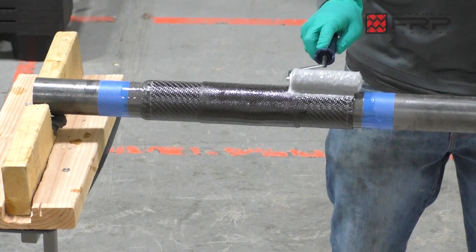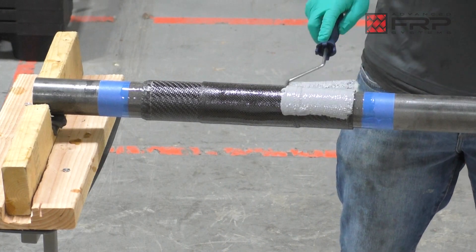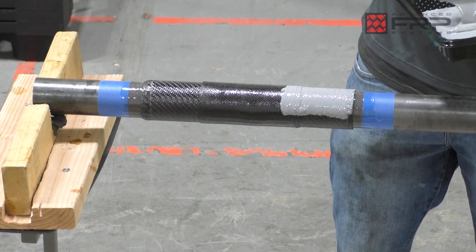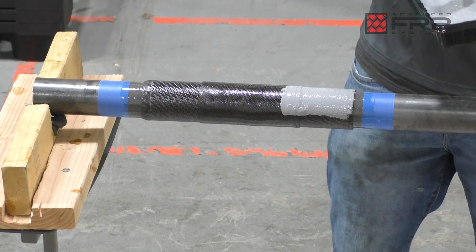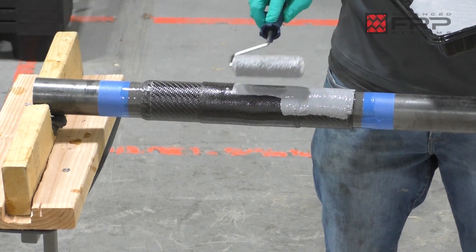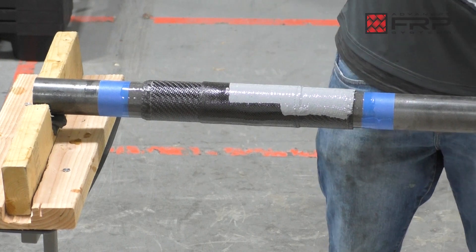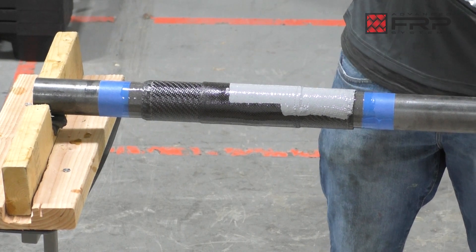Apply the HP300 epoxy top coat to the repair area at 10 to 20 mils using a roller. Be careful to avoid drips, sags, or holidays. Make sure the entire circumference of the pipe has an even application.